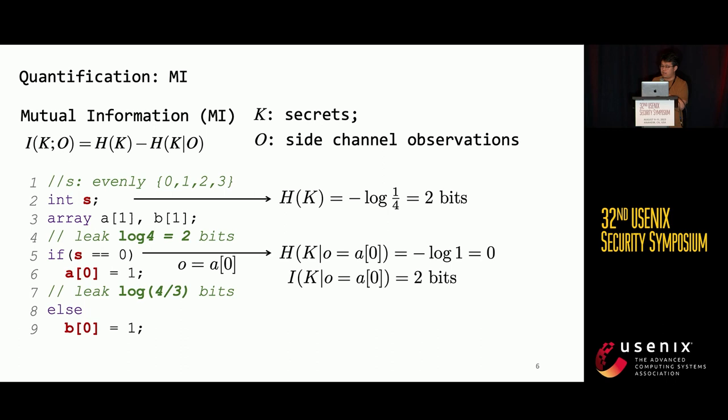Let's consider this example. The secret S is evenly distributed among 0, 1, 2, 3. The probability of correctly guessing its value is 1 over 4, so the uncertainty of S is actually 2 bits. Suppose through side-channel observations we know that if a condition is satisfied, then the value of S must be 0. The uncertainty is reduced to 0, and the side-channel leakage is 2 bits.